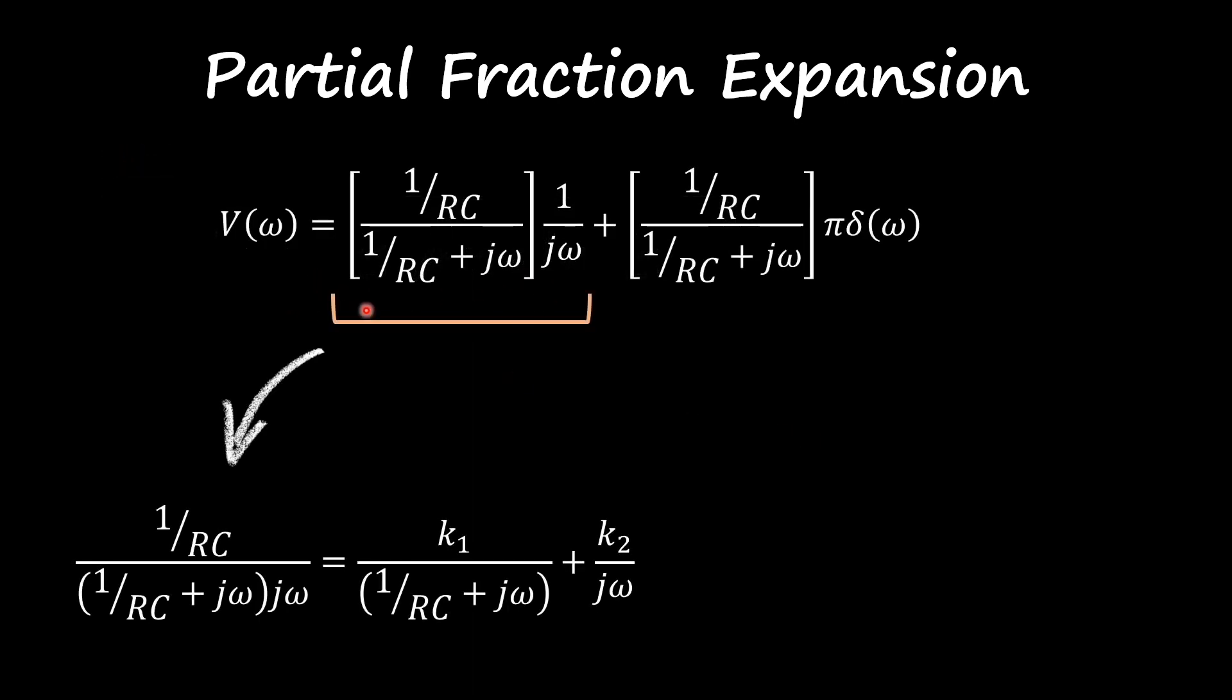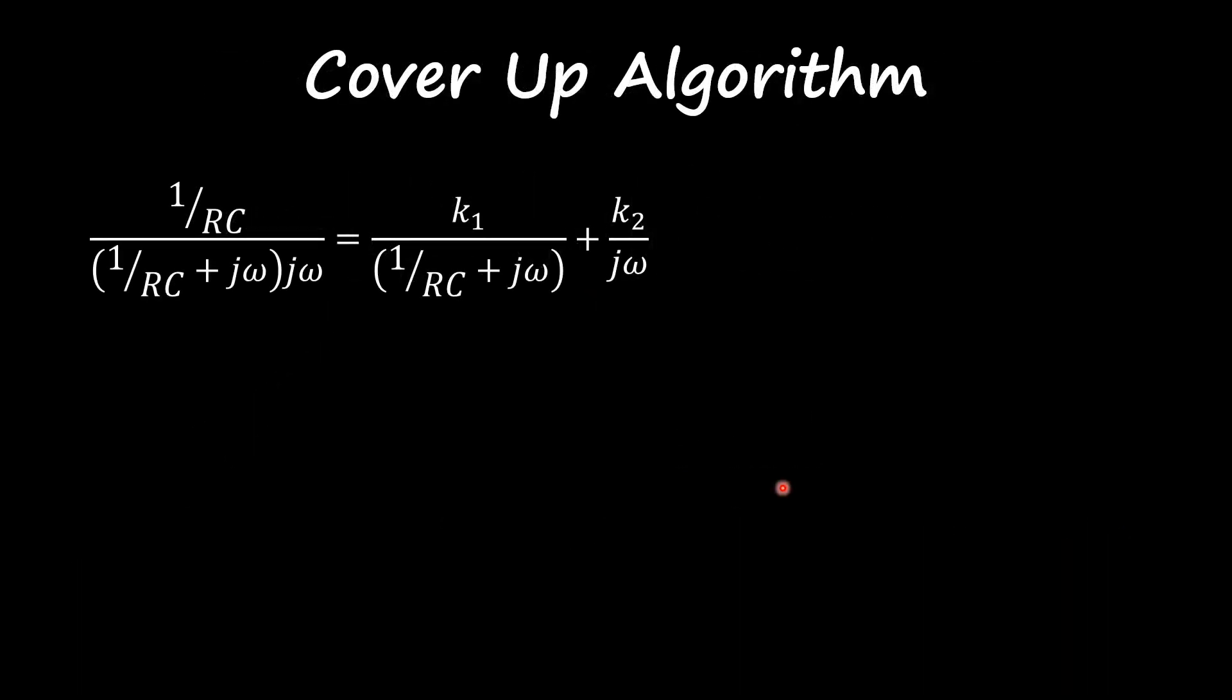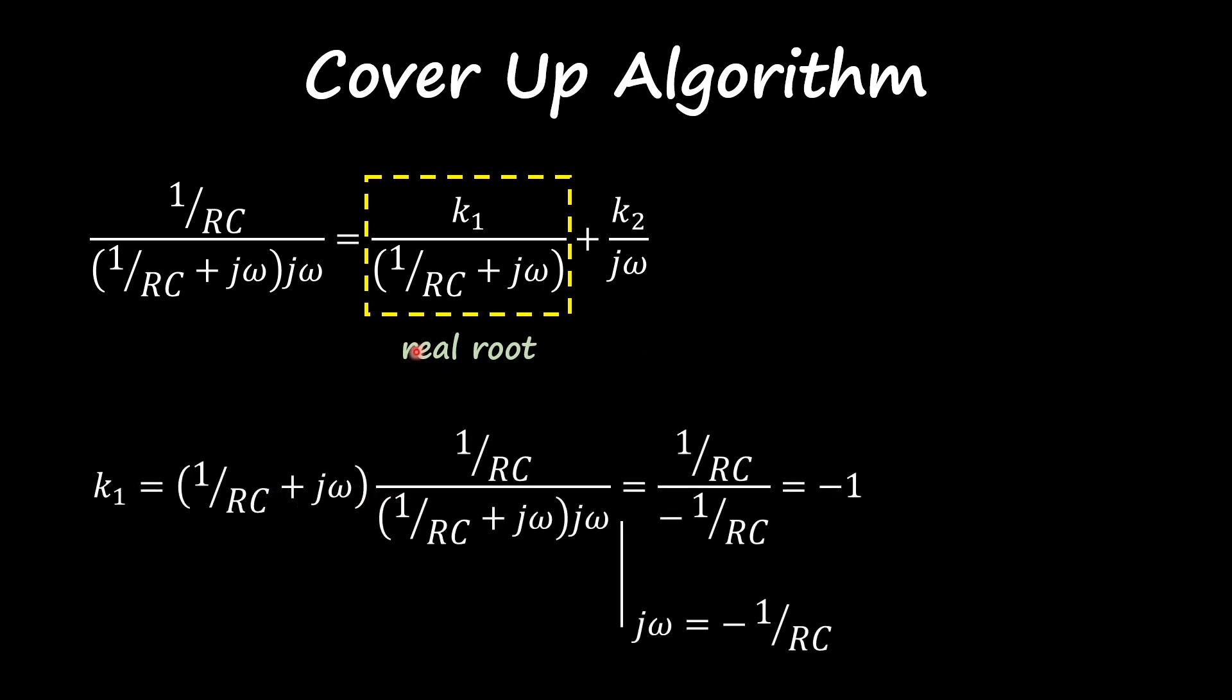Let's start with that first part of our equation. The goal is to have this part in this format here with the two poles separate from each other. So I want to find k1 and k2. I'm going to use the cover-up algorithm. If I apply the cover-up algorithm, the first one is a real root. All I'm doing is multiplying that by my transfer function where j omega equals that pole minus 1/RC. You can see that these two cancel out. Substitute my j omega by that and I get minus one.